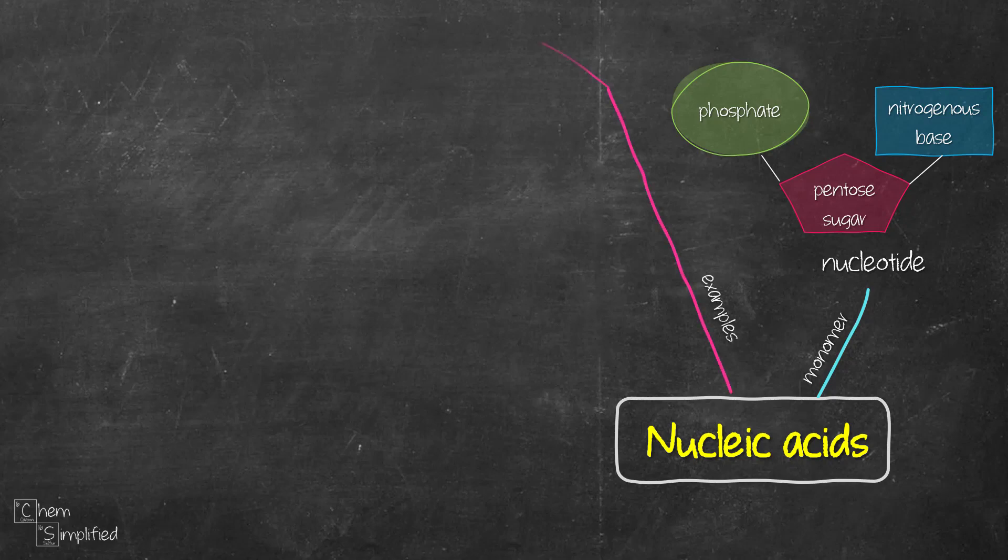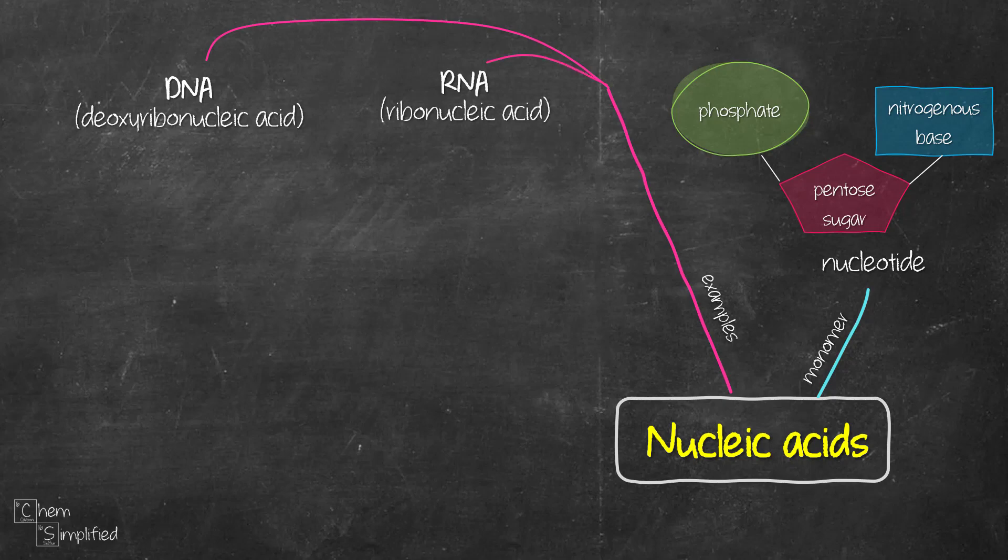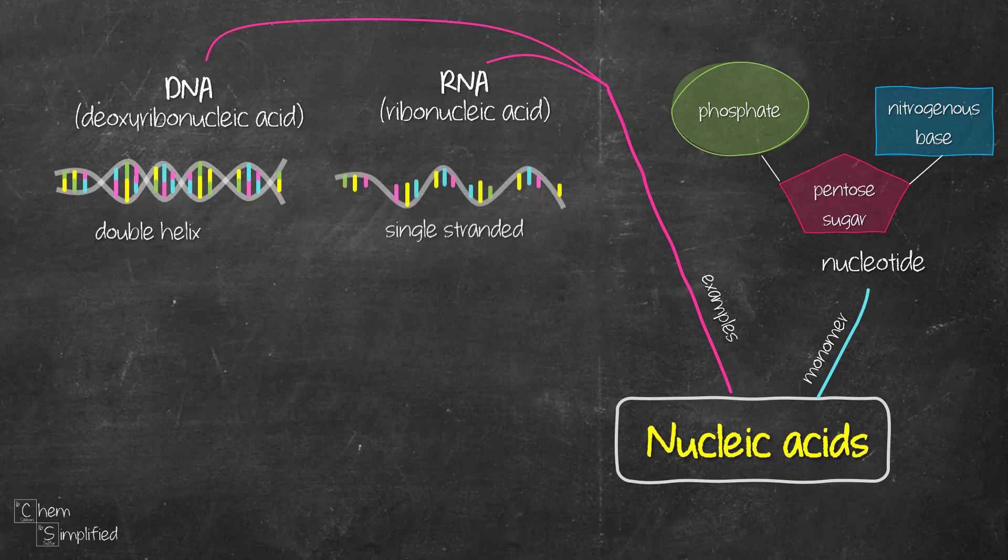There are two types of nucleic acid. One is DNA and the other one is RNA. There are several differences between DNA and RNA. One of them is in their structure. DNA has a double helix, while RNA is single-stranded.